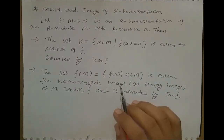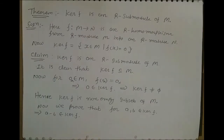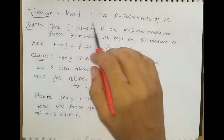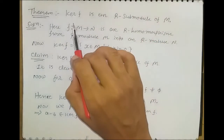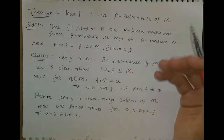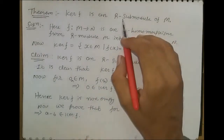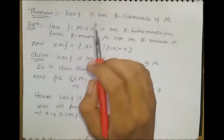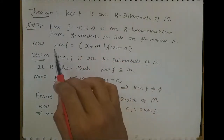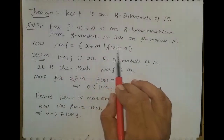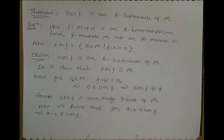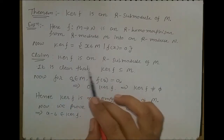Now we see some important theorems about the kernel and image of R-homomorphism. The first theorem is: the kernel of F is an R-submodule of M. Our aim is to prove ker(F) is an R-submodule of M. To prove it is an R-submodule, first we prove that ker(F) is a non-empty subset of M, and then we satisfy two conditions. Here F is an R-homomorphism from an R-module M to an R-module N. The kernel of F is the set of all x in M where F(x) equals 0.